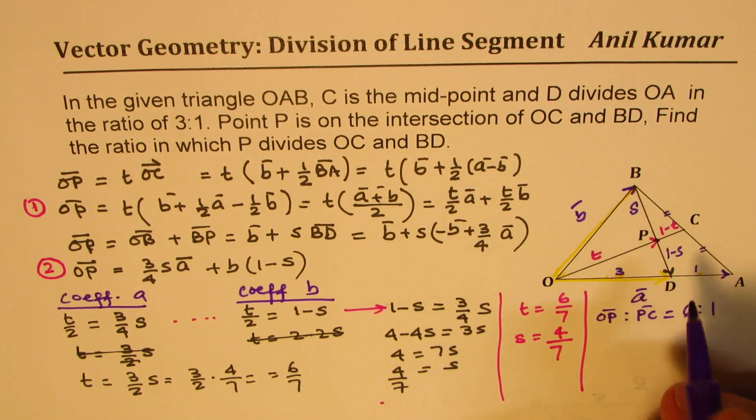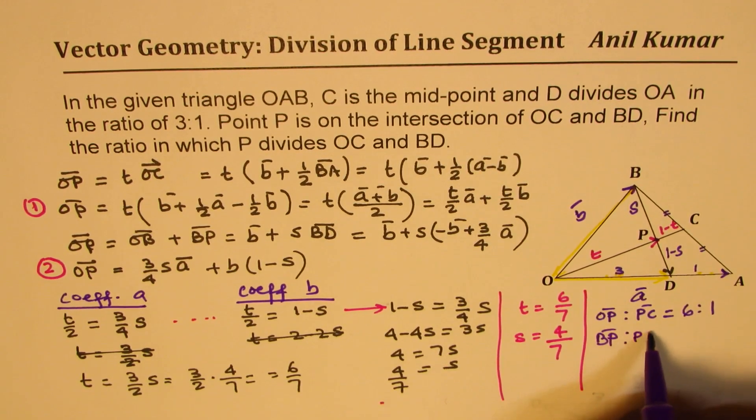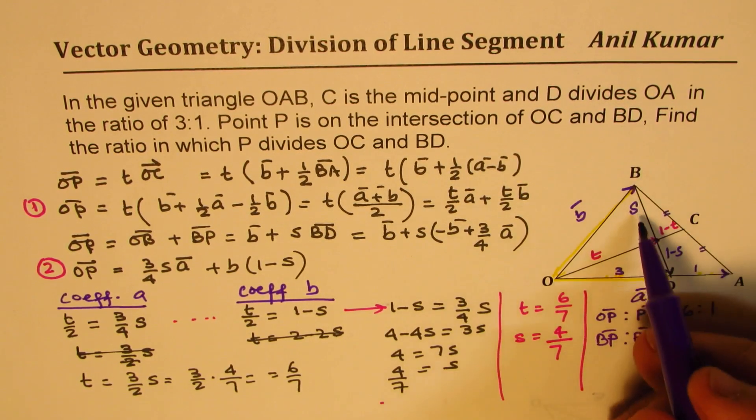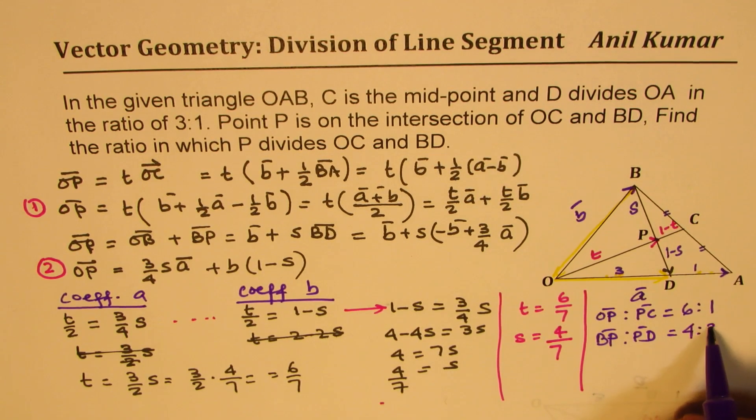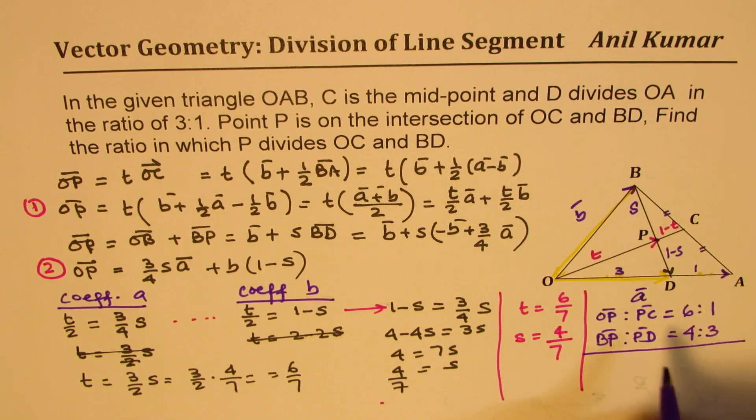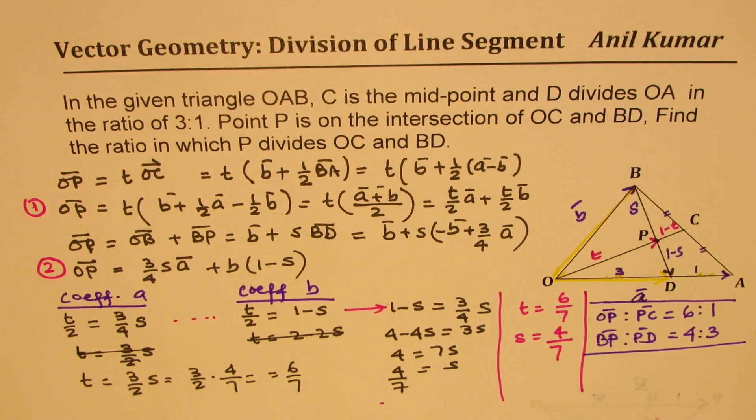As far as BD is concerned, the ratio of BP to PD is what? S is 4 over 7. So, 4 here, 3 there. 4 is to 3. So, that becomes our solution. Is that clear to you? So, that is how we are going to solve such questions.